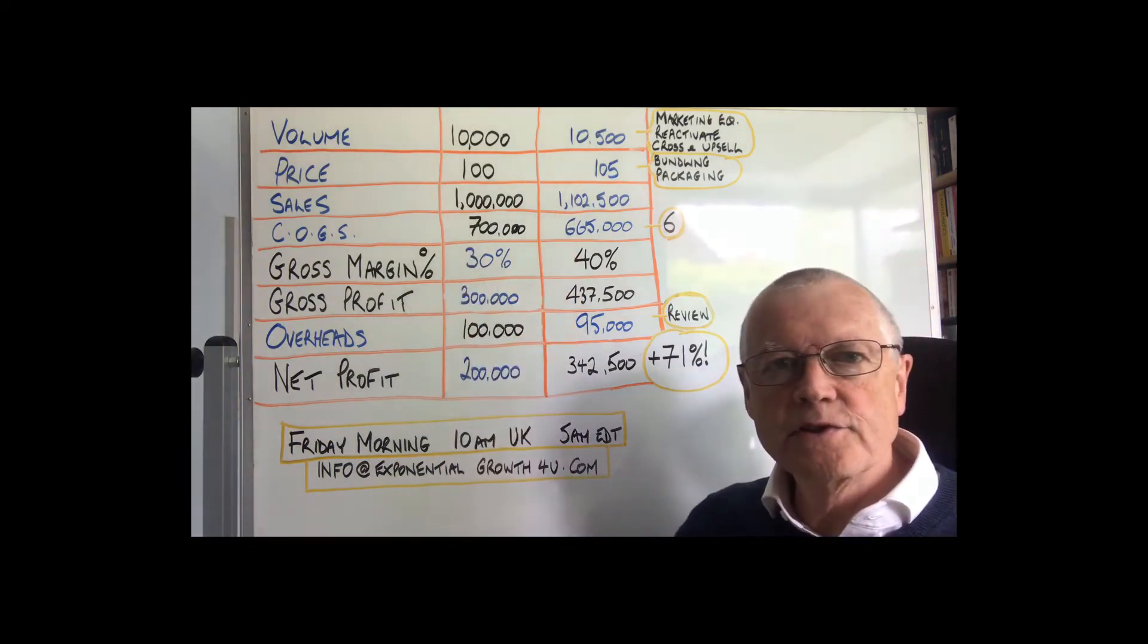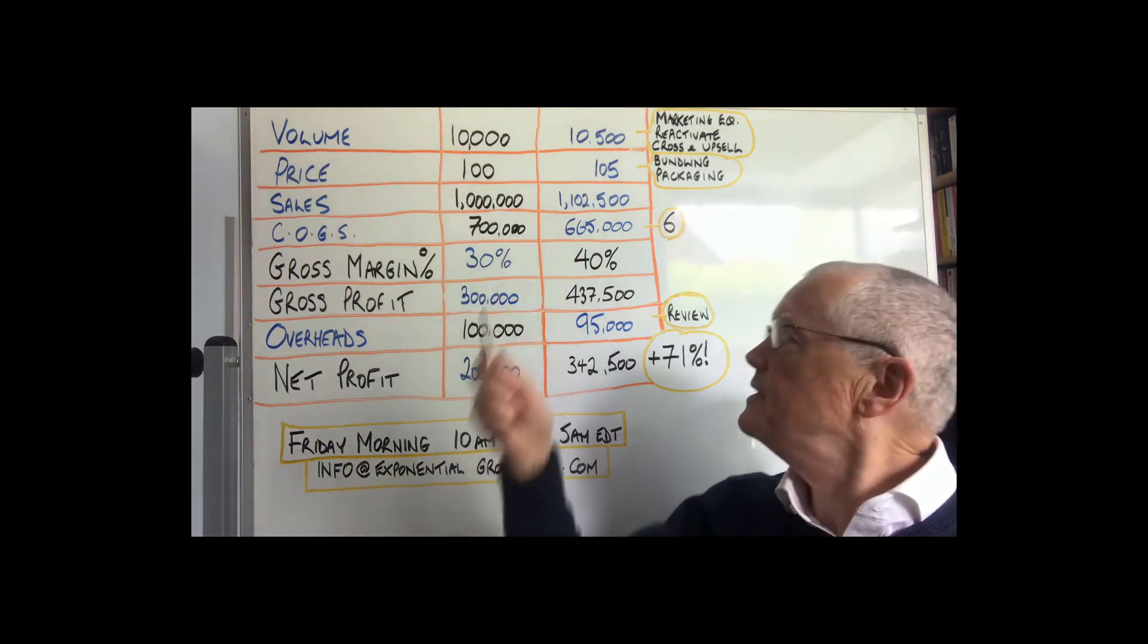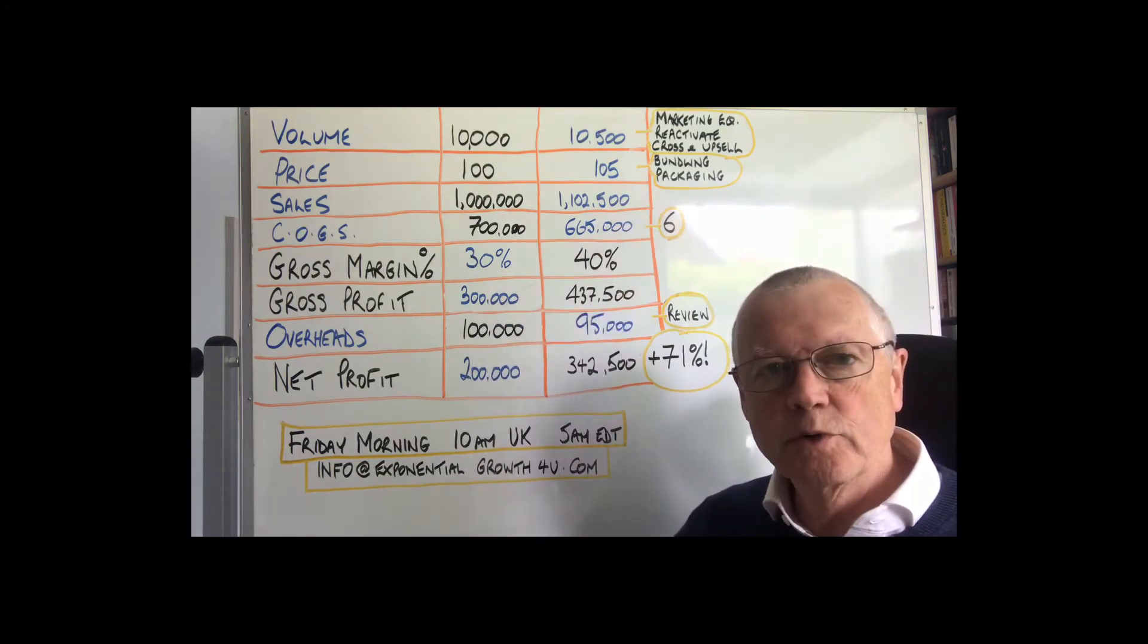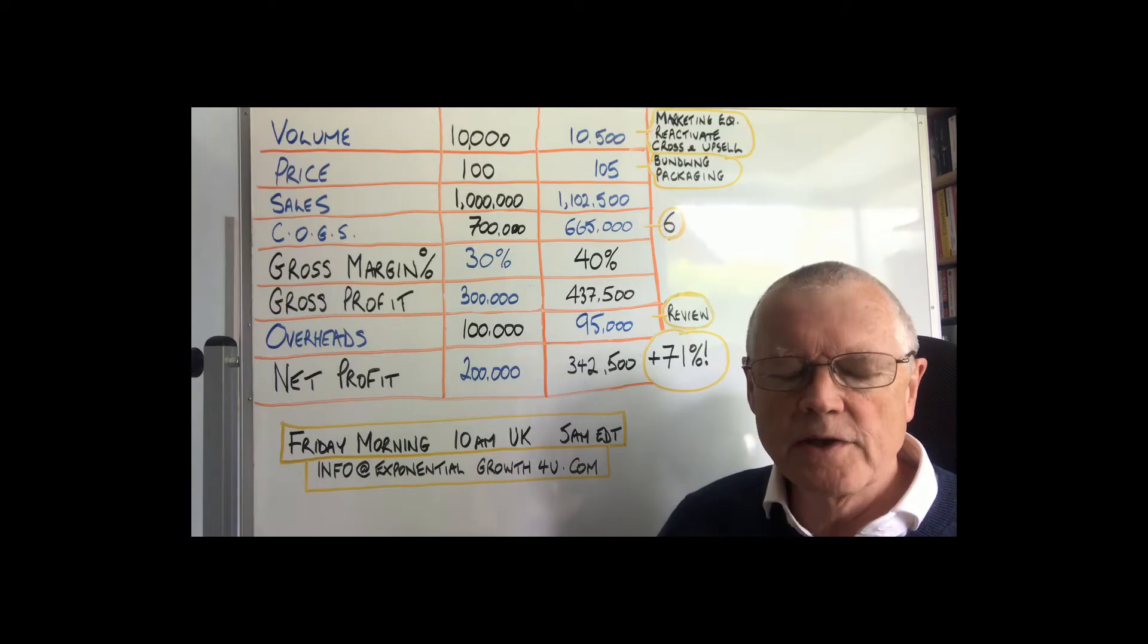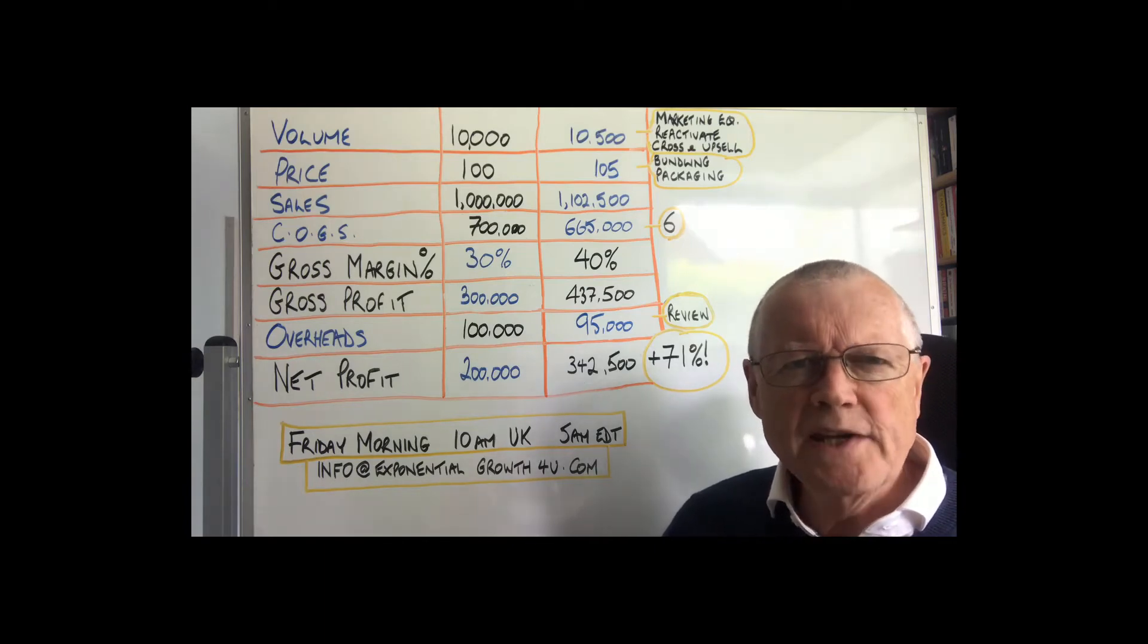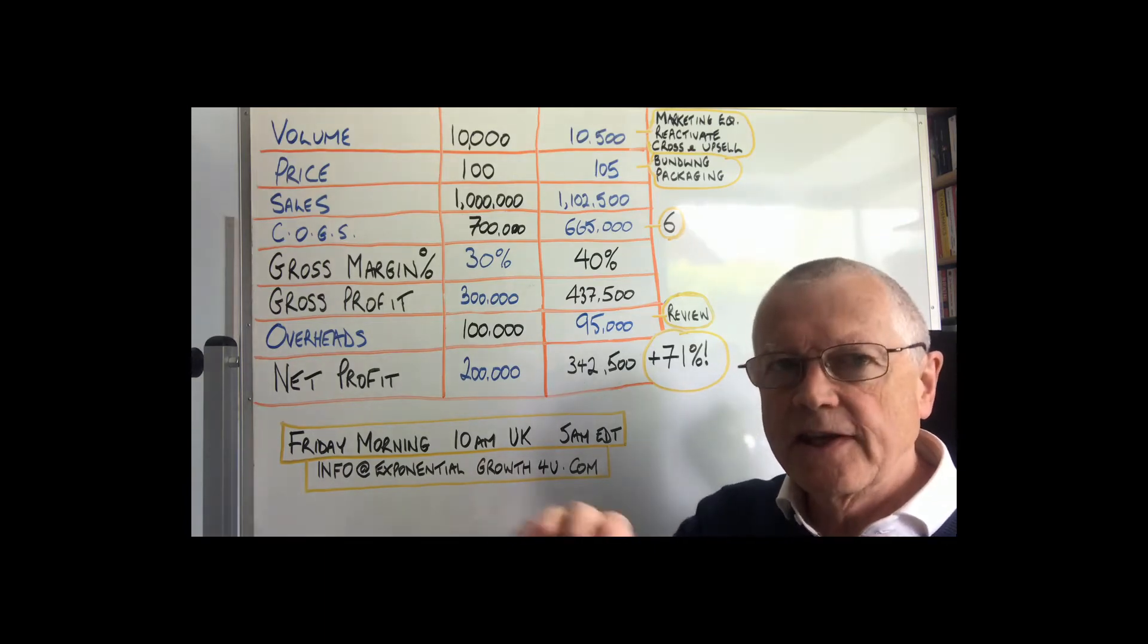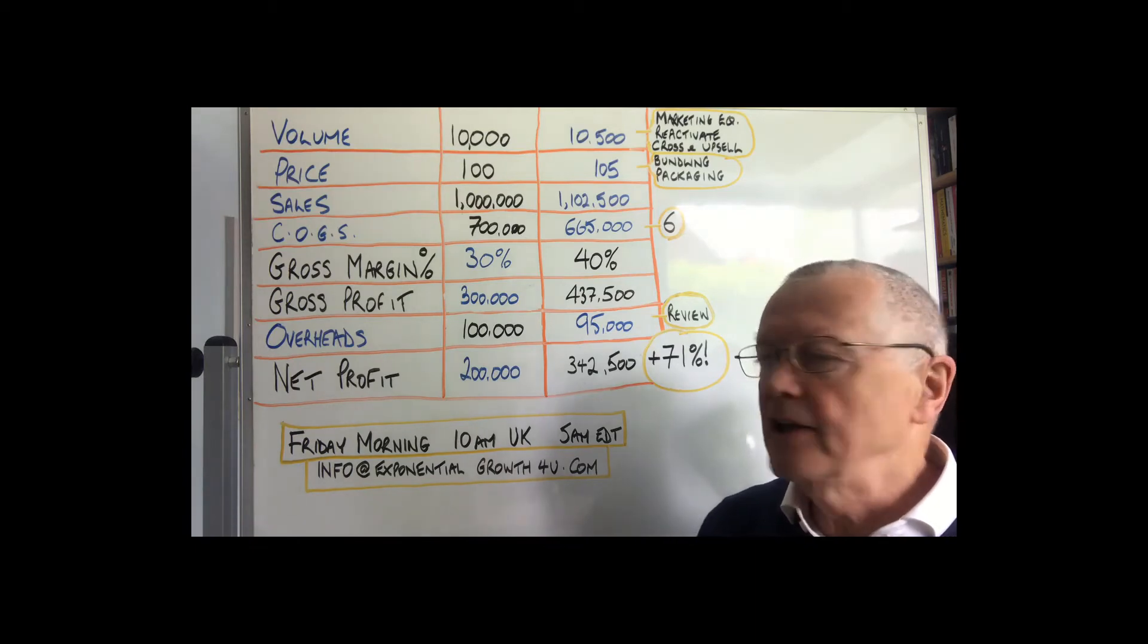Now how could we get our costs of goods sold down? Well, the six key areas you need to look at in terms of your variable costs. So it's things like how much stock you're keeping, it's things like have you got the best deals from suppliers, waste, returns, etc. The six key areas. We can look at those in detail on another occasion.